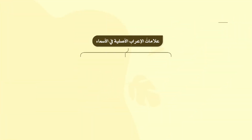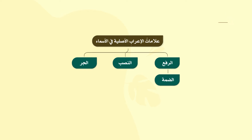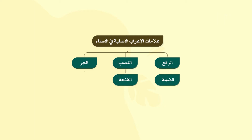درسنا لهذا اليوم هو درس القواعد: المثنى. ما علامات الإعراب الأصلية في الأسماء؟ العلامة الأصلية لرفع الأسماء الضمة، وعلامة نصبها الأصلية الفتحة، وعلامة جرها الكسرة.